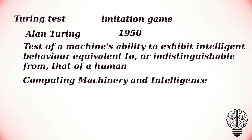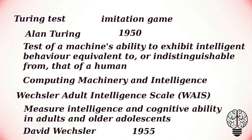The Turing Test, originally called the Imitation Game by Alan Turing in 1950, is a test of a machine's ability to exhibit intelligent behavior equivalent to or indistinguishable from that of a human. The test was introduced by Turing in his 1950 paper 'Computing Machinery and Intelligence.'